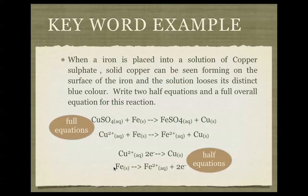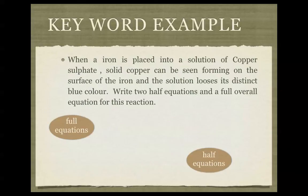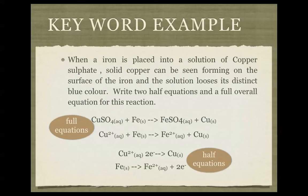To summarise the keywords for this reaction: oxidation is happening in the iron half equation, reduction is happening in the copper half equation, the oxidant is Cu²⁺, and the reductant is Fe(s).